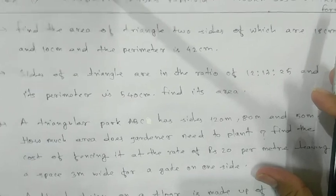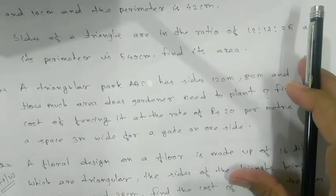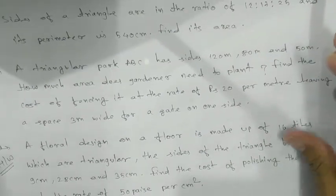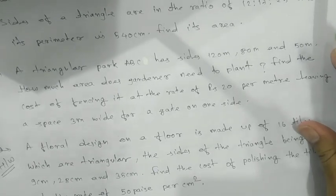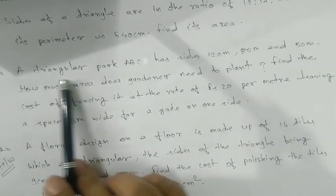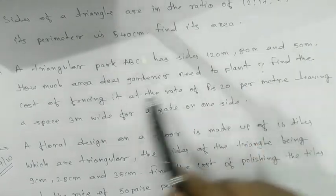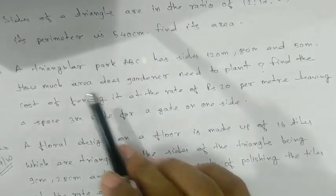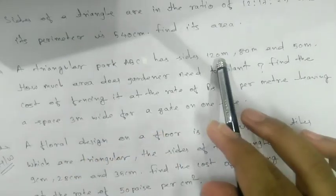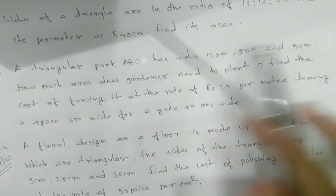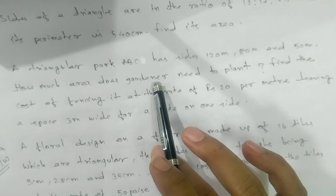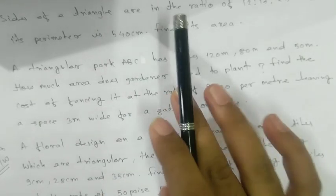The third one. So you can see the third one and the fourth one will be your homework. So the third one we will see. A triangular park ABC has sides 120, 80 and 50 meter respectively. Now you need to find the area. They have already given the three sides. Direct formula we are going to apply here and we will get the area of triangle.